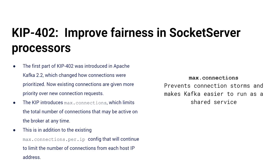KIP 402 makes the socket server a little more fair. Historically, the socket server prioritizes new connections over existing connections. If something has gone wrong in the network or with a client and there's a connection storm going on to a broker, it prioritizes all those new connections and lets existing connections fall behind — basically you can very quickly DOS an individual broker. KIP 402 balances the priority between new and existing connections so that's a little bit harder to make happen.